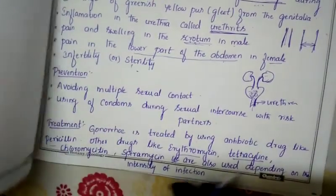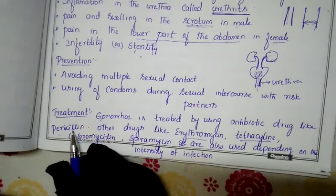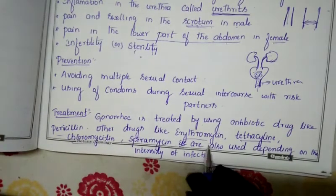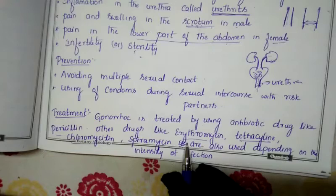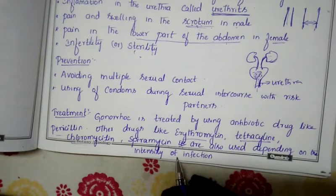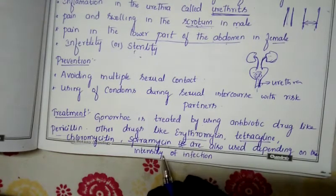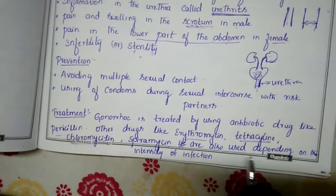For treatment, various antibiotic drugs are given, including penicillin — derived from the fungus Penicillium notatum — as well as erythromycin, tetracycline, chloromycetin, and spiramycin. Doctors prescribe these based on the intensity of the infection and how much the disease has spread in the body.